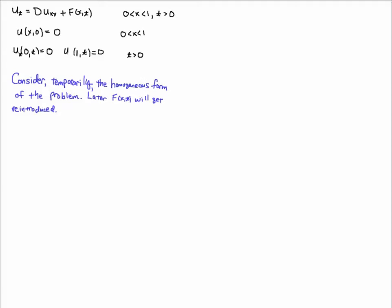The first thing we're going to do is consider the homogeneous form of the problem first, and then we'll introduce f(x) later. You might be asking, can we just do that? The answer is yes, because we're going to consider the spatial part of the equation and f(x) will get absorbed into an integral involving the basis functions. The fancy way of saying that is we're projecting f into the space of basis functions. If we consider only the homogeneous form, we have a PDE without the f term.